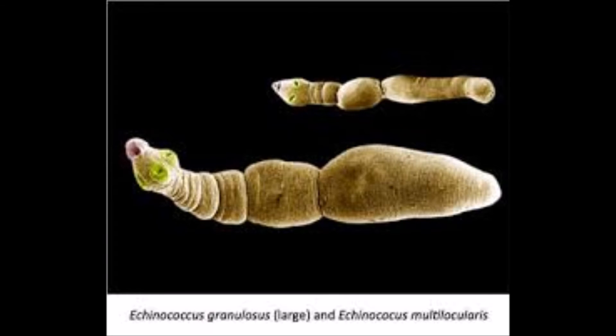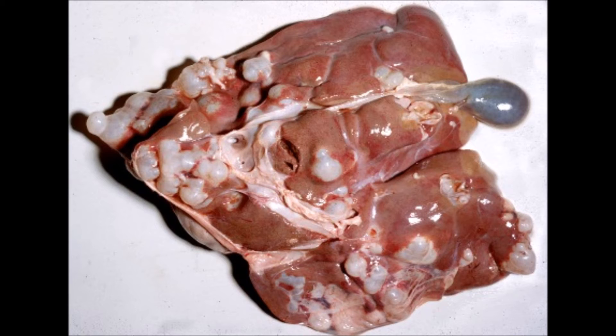Pain or discomfort in the upper abdominal region or chest, nausea, vomiting, or coughing may occur as a result of the growing cyst. Rupture of cyst fluid can lead to allergic reactions or death.